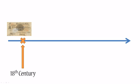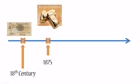Some people in countries were still using gold and silver coins, whereas others were actively using paper money, and there was no real connection between the two. And that is when the gold standard came into play.